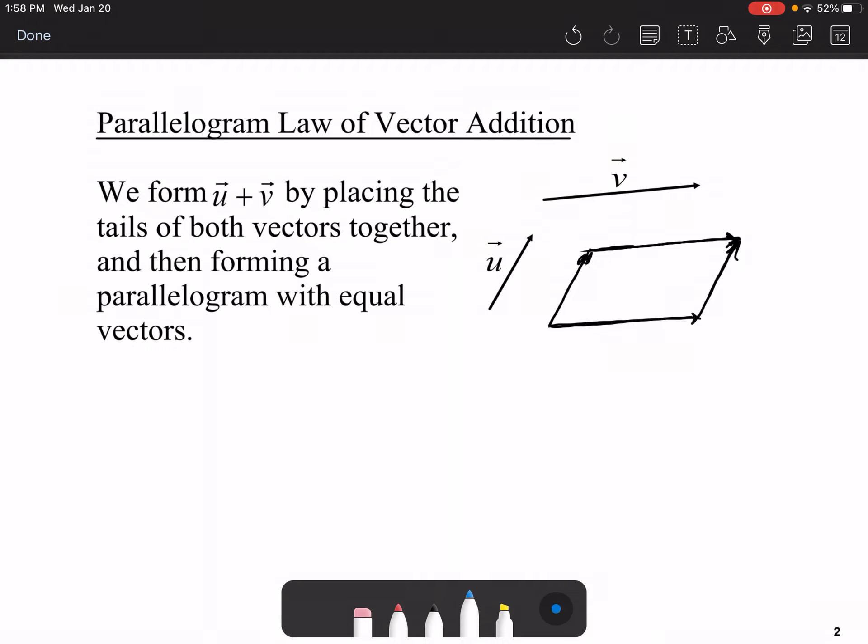To draw U plus V, what you do is you locate the two tails and draw a vector, or a line, headed towards the two heads. Like so. Your new head is located where the two heads meet, and your two tails, where they meet, is your new tail. And this is your resultant vector, U plus V.